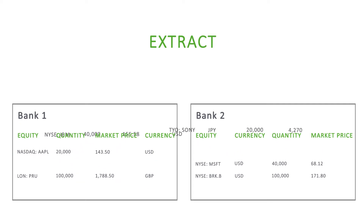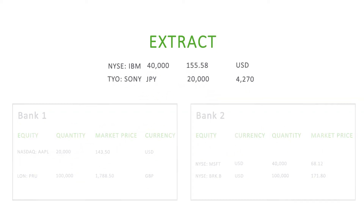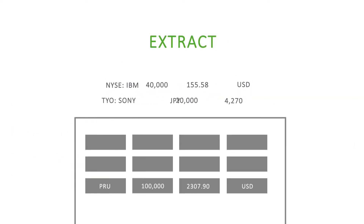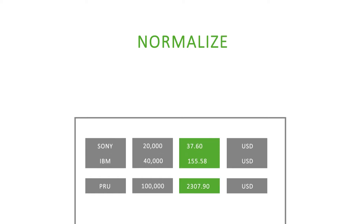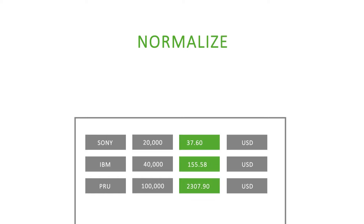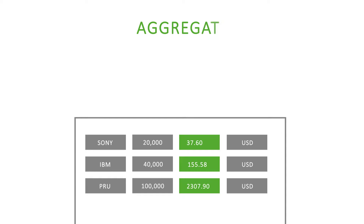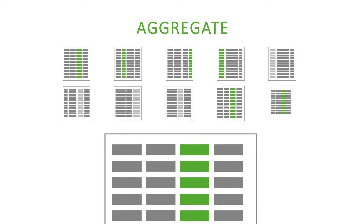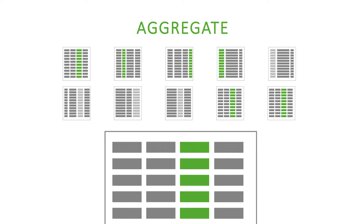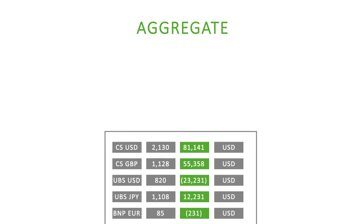Canopy will extract the data in machine-readable format, normalize each financial institution's unique data and table structure into a standard format, and aggregate all data across accounts and by each asset category.